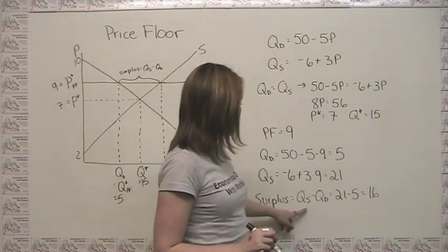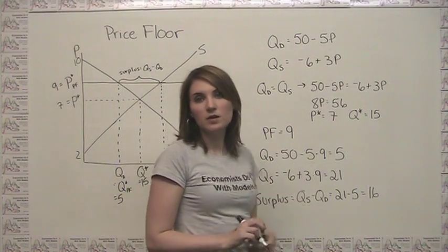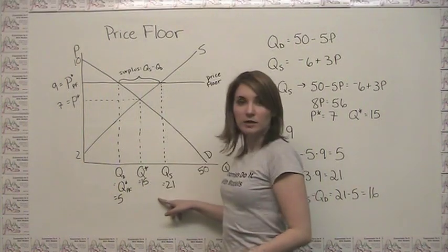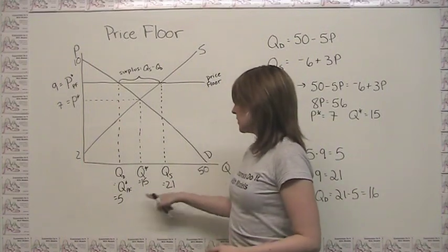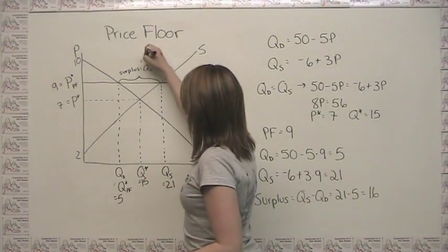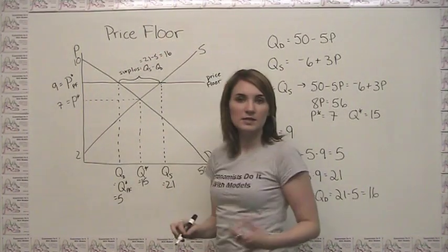And we define our surplus as quantity supplied minus quantity demanded in this case, because supply is the one that's bigger. So our surplus is defined by 21 minus 5, which is equal to 16.